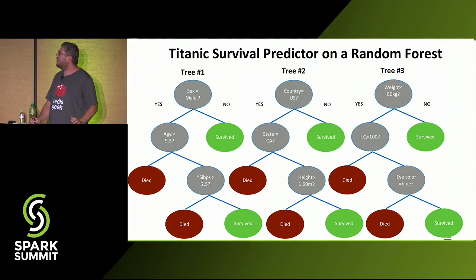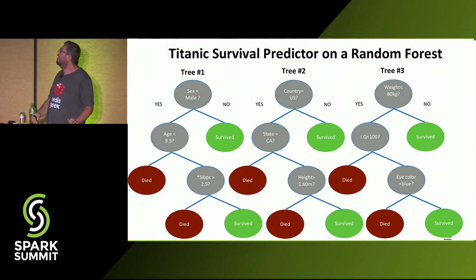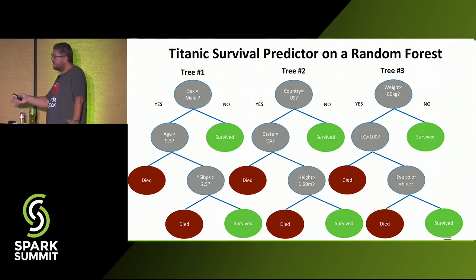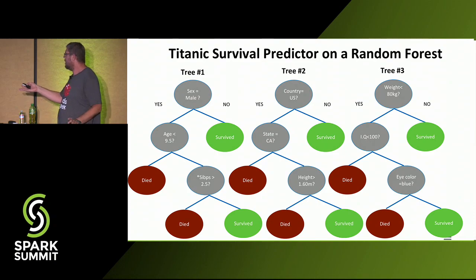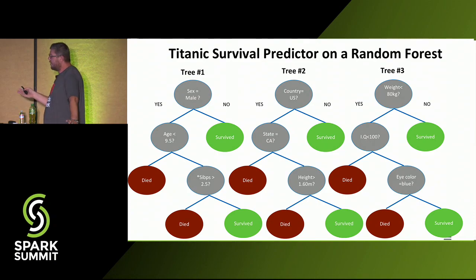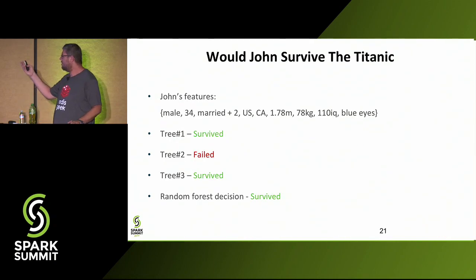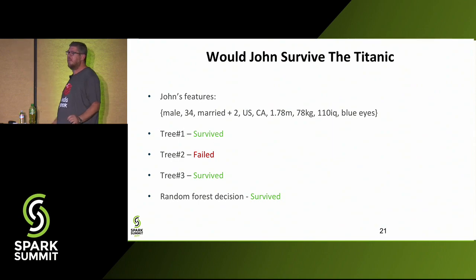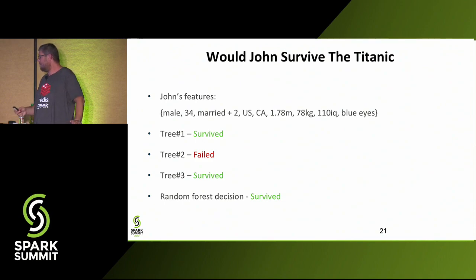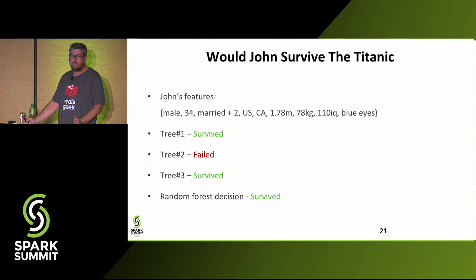In a forest, each tree uses a different set of splitters. Tree number one uses sex, age, and number of siblings. Tree number two uses country, state, and height. Tree number three uses weight, IQ, and eye color. For an example passenger with certain features, tree one predicts survival, tree two predicts death, and tree three predicts survival again. The majority voting result would be survival for this example.